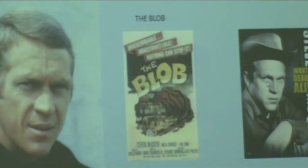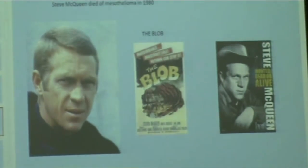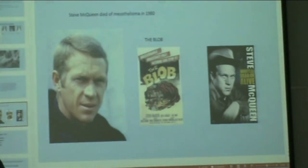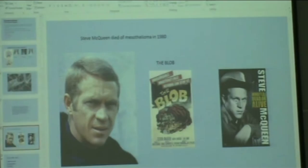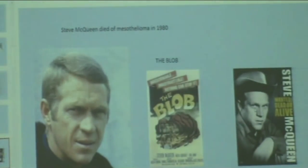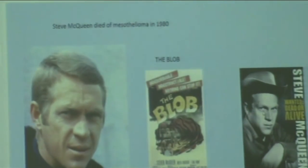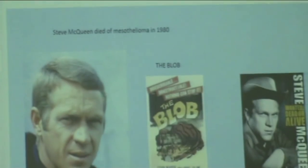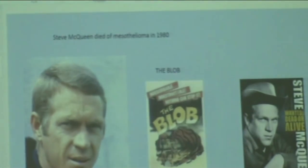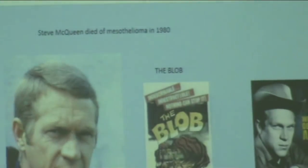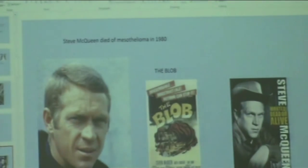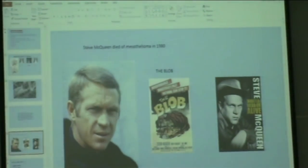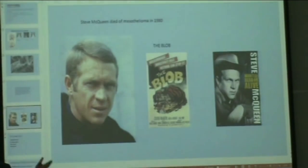This is Steve McQueen — he had a TV show called Wanted Dead or Alive and he had the strangest-looking gun. He was also in The Blob, about a big bowl of Jell-O coming from space and eating people. Normally people eat Jell-O, but in this case the Jell-O was eating the people. They made movies like The Son of Blob and all that. Steve McQueen was a race car driver who wore asbestos clothes — that's how he was exposed.